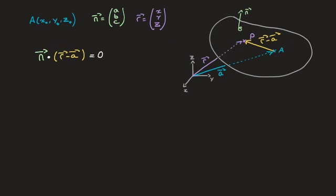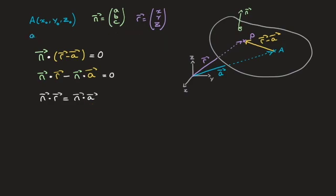Here's how we get the scalar product form of a plane's equation. Using the fact that the normal vector n is, by definition, orthogonal to all vectors contained in the plane, the dot product of n with any vector contained in the plane must equal zero. Consequently, the dot product of n and the yellow vector r minus a equals zero. Using the distributive property of the dot product, we can rewrite this as n·r minus n·a equals zero.